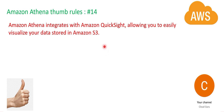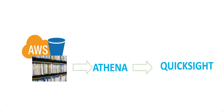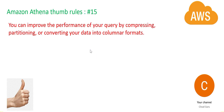Always remember: Athena integrates with Amazon QuickSight. QuickSight is a BI reporting tool similar to Tableau, Cognos, or Qlik. Athena sits in between S3 and QuickSight and integrates very well with it. To improve performance, you should use compression, partitioning, and convert your data to columnar formats like Parquet or RC files. These three tips will help you reduce cost and improve performance.